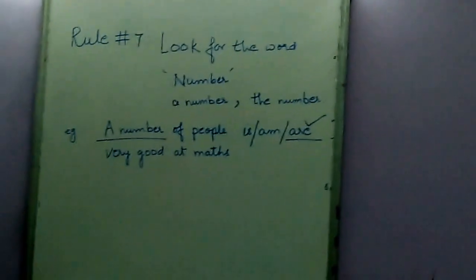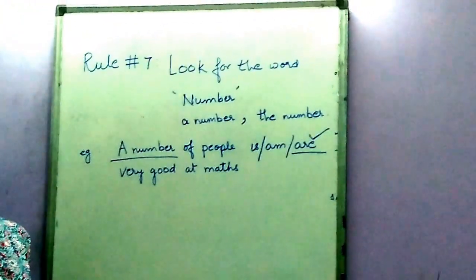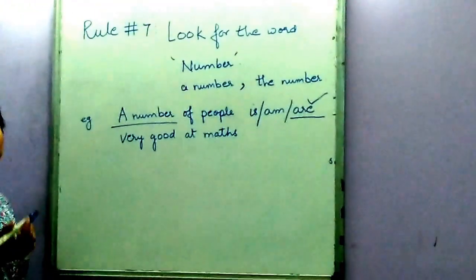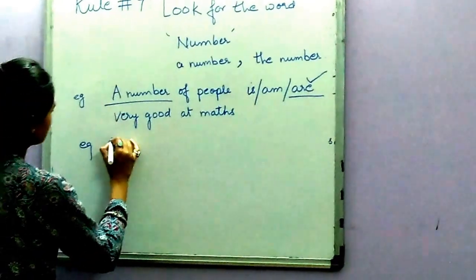Plural. People. People. Person is singular, people is plural. So people is plural. Next is the number.